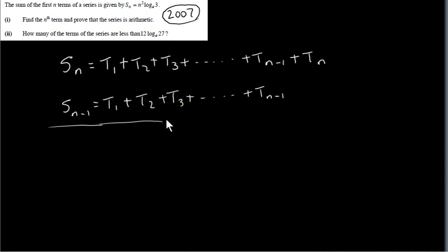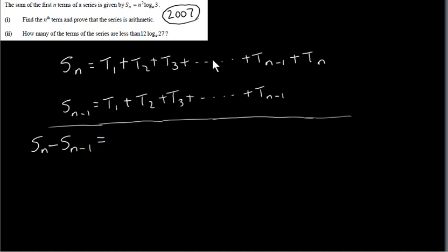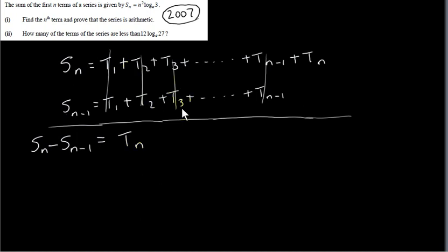Now look what happens when we subtract these two equations. Take the left-hand side of the top equation and subtract the left-hand side of the bottom equation — we get Sₙ minus Sₙ₋₁. Then subtract the right-hand side of the bottom from the top. This is allowable because we're doing the same thing to both sides. Everything cancels out and we end up with just tₙ. So this is an important relation: tₙ = Sₙ − Sₙ₋₁.